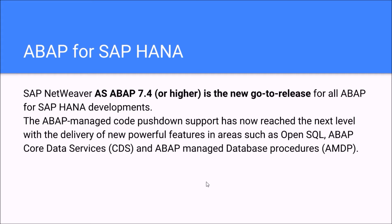ABAP for SAP HANA. SAP Netweaver application server ABAP 7.4 or higher is the new go-to release for all ABAP for SAP HANA development. The ABAP managed code pushdown support has now reached the next level with the delivery of new powerful features in areas such as OpenSQL, ABAP Core Data Services, and ABAP managed database procedures — AMDP.